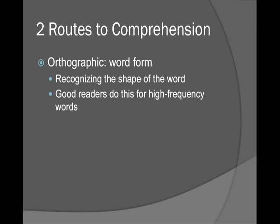There are two routes to comprehension. The first route is the orthographic side — orthographics meaning the way the word looks. I recognize the shape of the word. It's really good for high-frequency words that we see a lot, so we don't have to spend time sounding them out. For example, irregular words like 'have' — where 'gave,' 'save,' 'Dave,' 'wave,' 'cave' all rhyme, but 'have' doesn't follow the pattern. Most people figure that out quickly because they get corrected. The orthographic side means: I know this word is pronounced this way because of how it looks.